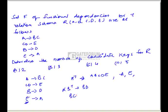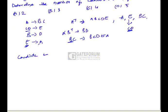Let us find BC closure. BC gives BCD from B→D; from CD we get E; from E we get A. So BC closure gives all attributes, meaning BC is also a candidate key. Similarly, from CD we can derive E, and then all attributes, so CD is also a candidate key. The candidate keys are A, E, BC, and CD.